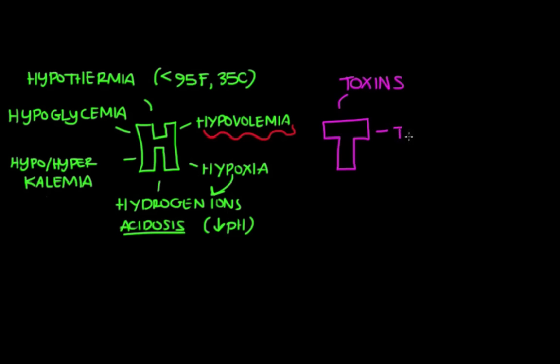The second T is tamponade, and that's something we just talked about. And we're referring to cardiac tamponade. Like we said, this is a condition where blood fills the space that lines the heart, or the pericardial sac. And this constricts the heart, and makes it a lot harder for the heart to pump.